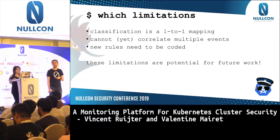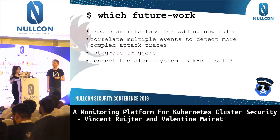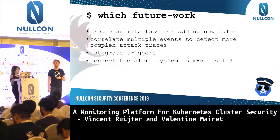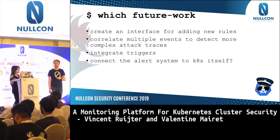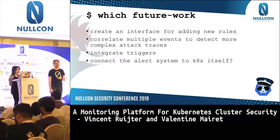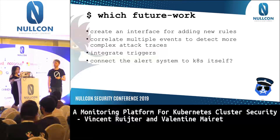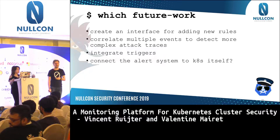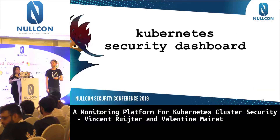These limitations represent potential for future work. We could create an interface for adding and deleting rules, correlate multiple events to detect more complex attack traces and follow an attacker throughout their movements in Kubernetes. We could also integrate triggers — for example, if a critical asset like etcd is attacked, generate an SMS, email, or message to the person responsible for the Kubernetes instance. We could also connect the alert system to Kubernetes itself, so if malicious requests are detected from a specific IP, we could block that connection.